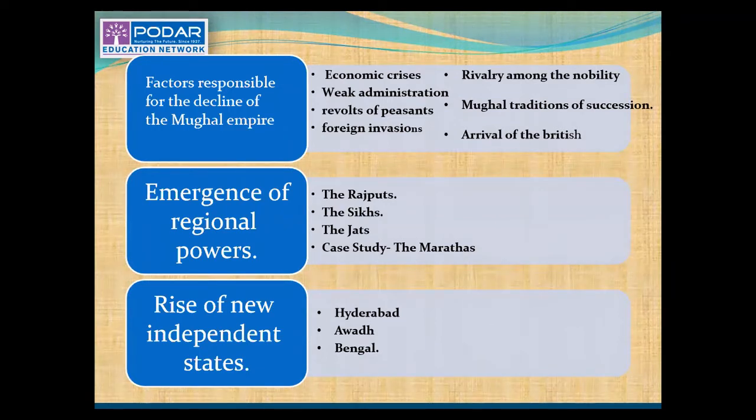The factors behind the decline of the Mughal Empire are: first, economic crisis; second, weak administration; third, revolts of peasants; fourth, foreign invasions; fifth, rivalry among the nobles; sixth, the Mughal tradition of succession; and lastly, the arrival of the British.